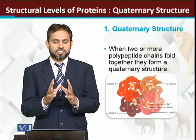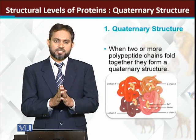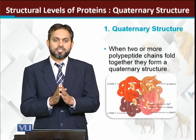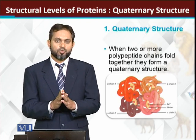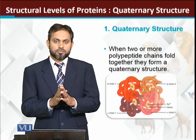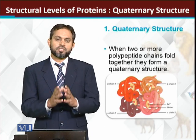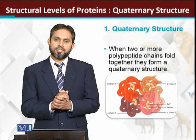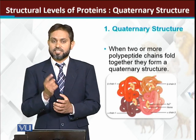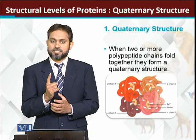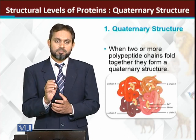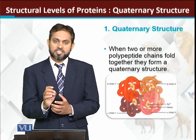By definition, we call it quaternary structure — it is basically the structure of a protein formed by the folding of two or more than two polypeptide chains. This is the protein which contains more than one polypeptide chain and thus has a quaternary structure.